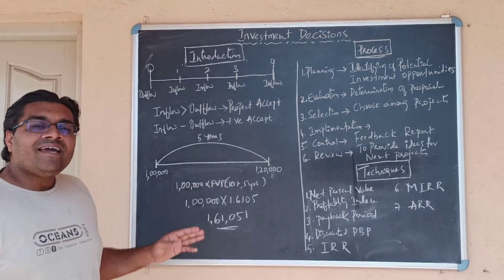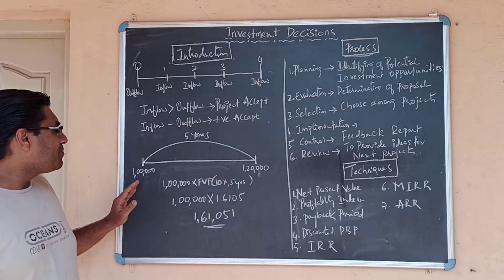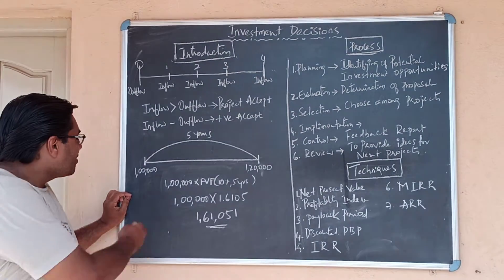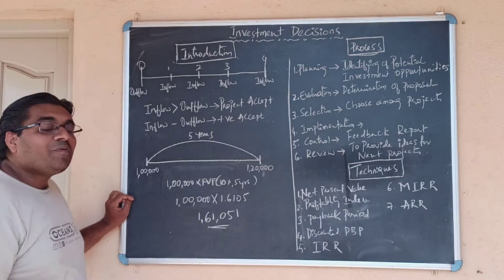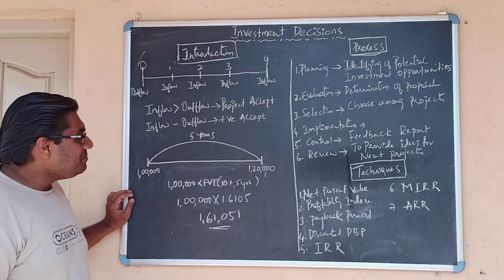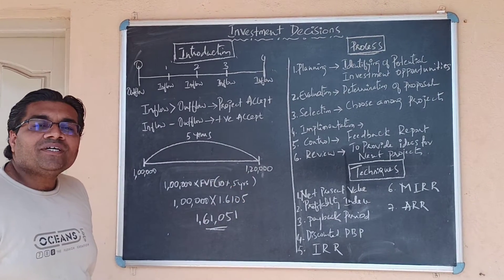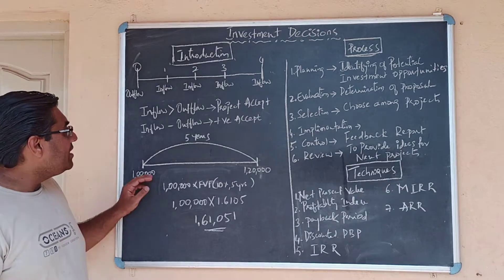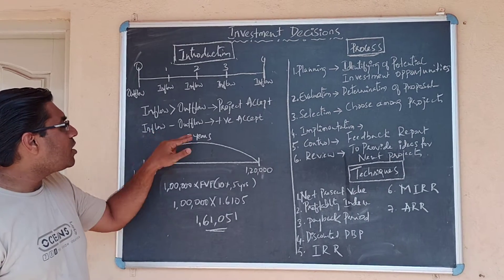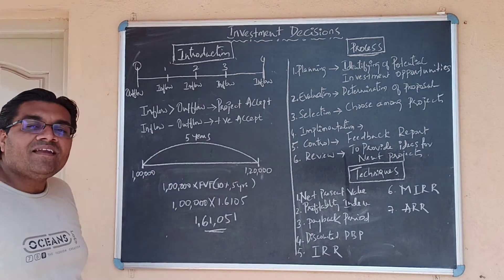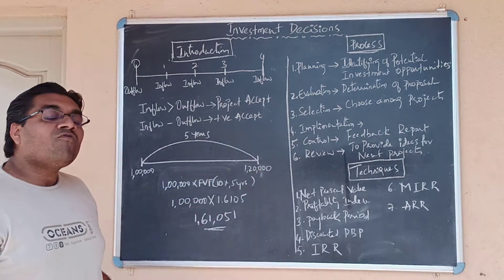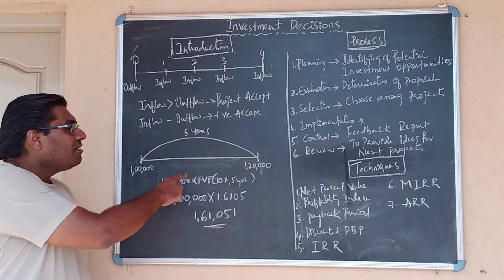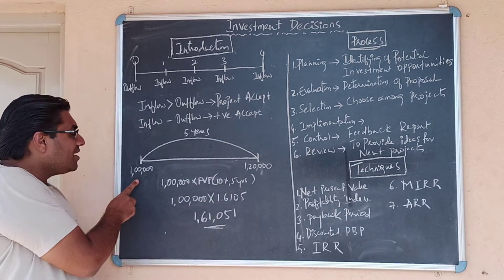Let's see the second example. If you have a project, we have the same amount over five years. We need to deal with inflation, but the amount may not be fully covered. Over three years, we have the same amount of inflows and outflows.